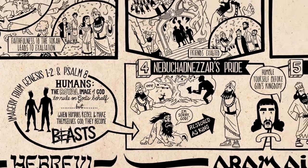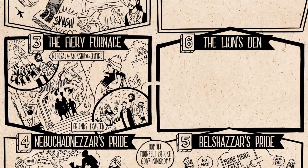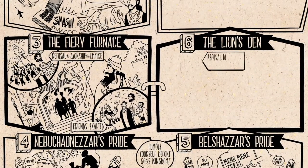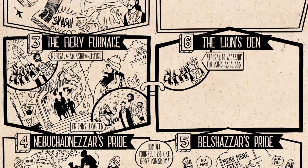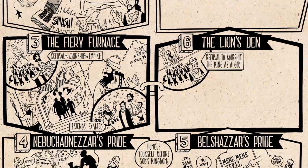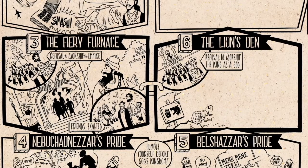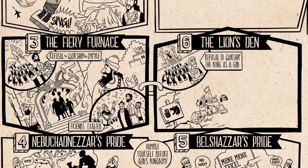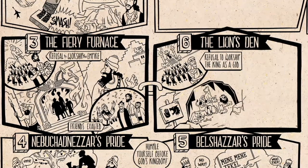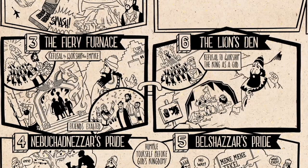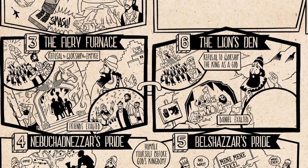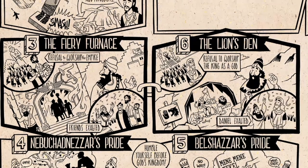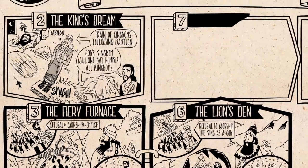This brings us to chapter 6, the pair of chapter 3. This time it's Daniel who's being persecuted because he refuses to pray and worship the king as a god. Like his friends, he's sentenced to death and thrown into a lion's den. But God delivers him from the beasts. And like the friends, the king exalts Daniel and praises his God.